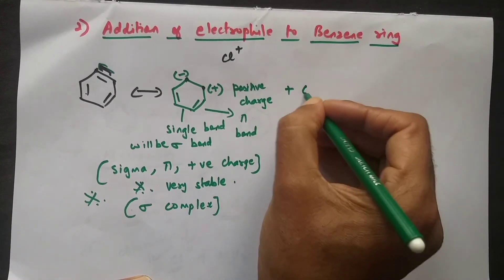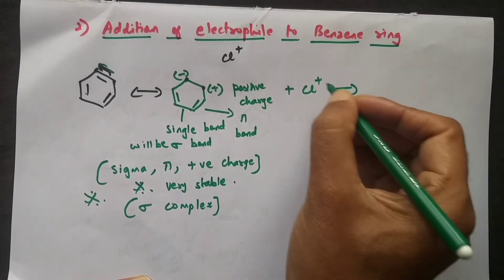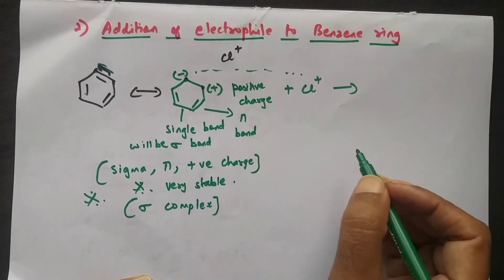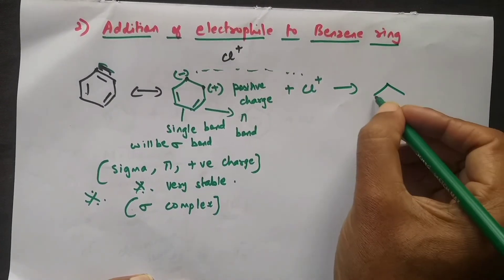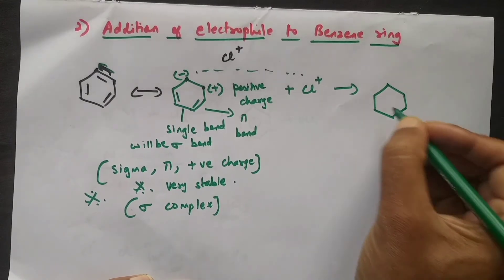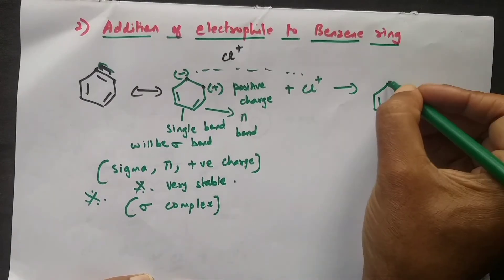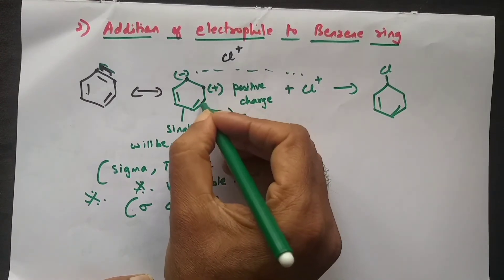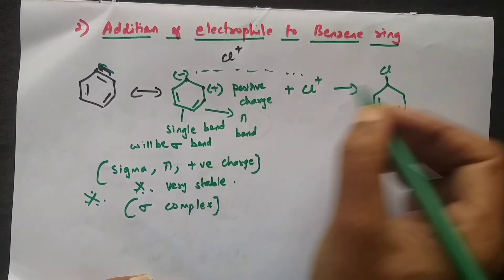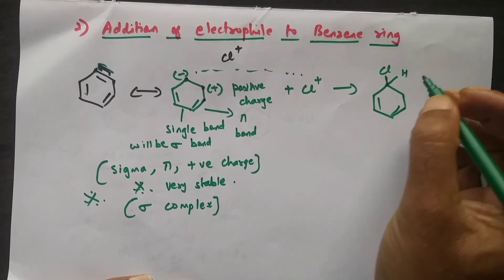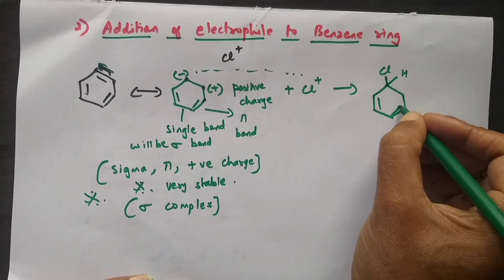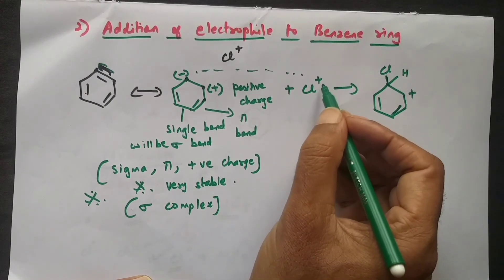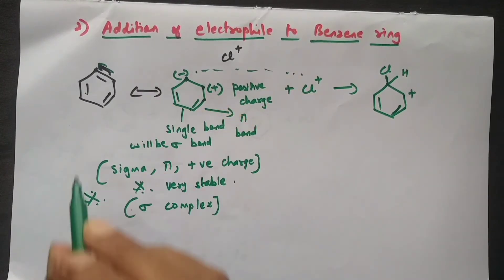Now the chloronium ion (Cl⁺), which has the positive sign, will go and attack the ring. The product will still have two double bonds, with a Cl attached, and each carbon also carries a hydrogen. The positive charge remains on the ring carbon. This is the result of adding the electrophile to the benzene ring.